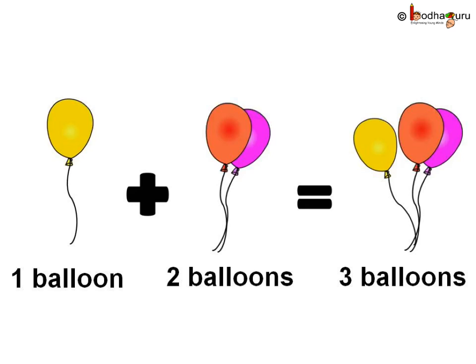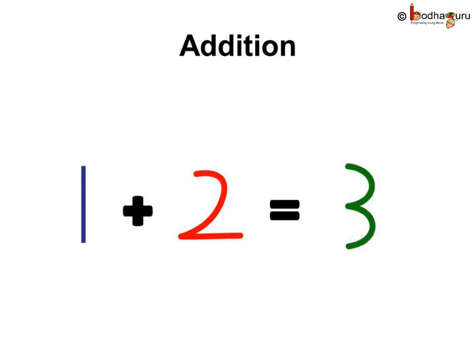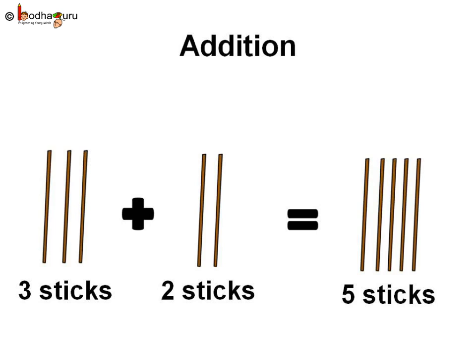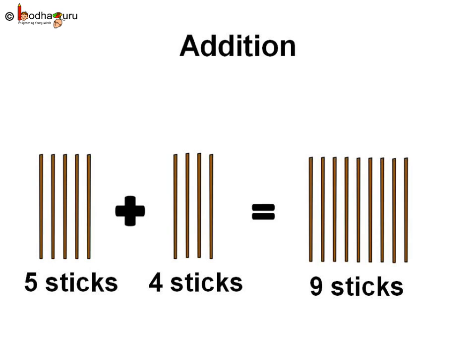As we are doing addition, let us put the symbol plus, which means addition. So one balloon plus two balloons is equal to three balloons, or one plus two is equal to three. Right, children? Same way in the case of sticks: three sticks plus two sticks equals five sticks. Another example: five sticks and four sticks equal to nine sticks.